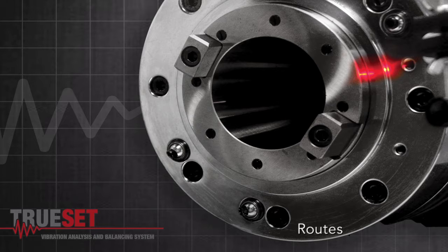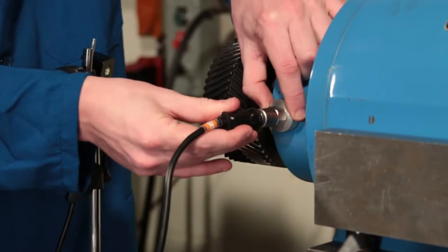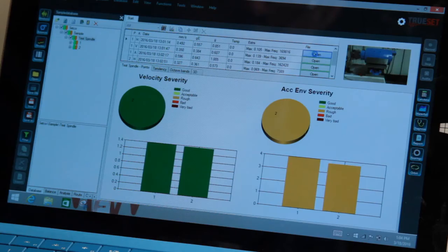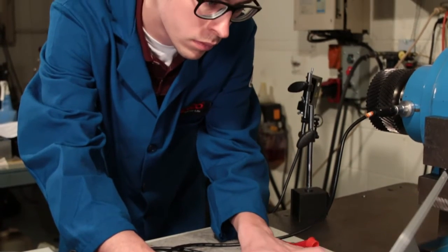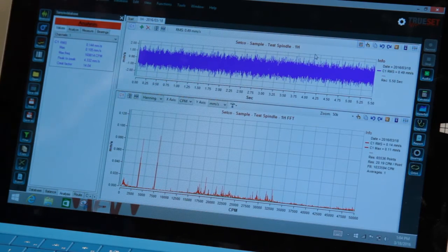This video will help you understand how to add equipment to a database and take a route. A route allows vibration data to be collected and saved to create history of equipment. Make sure the desired database is opened or created. If you need to add a new piece of equipment, refer to the Adding a Database video module.